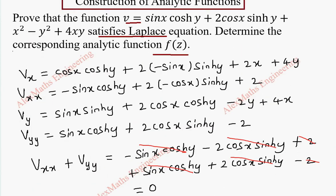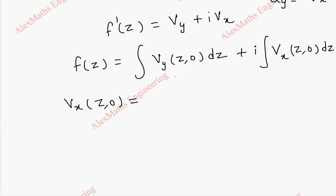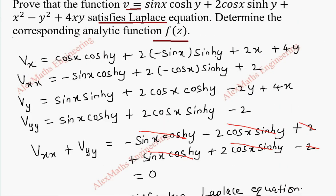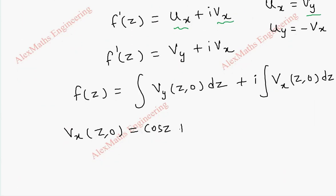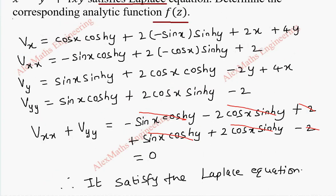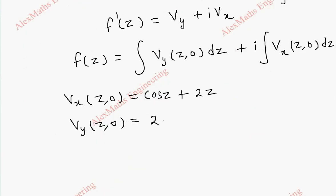Let's take vx. Where x is, we put z, and where y is, we put 0. So when we put y as 0, cos 0 is 1 and cos x becomes cos z. When I put y as 0, everything else is 0 and the last term is also 0, so in between we have plus 2z. Now let's take vy of (z, 0). When I put 0 here everything is 0. When I put 0 here we are left with only 2 cos x, so 2 cos z. x becomes z, and the last term is plus 4z.